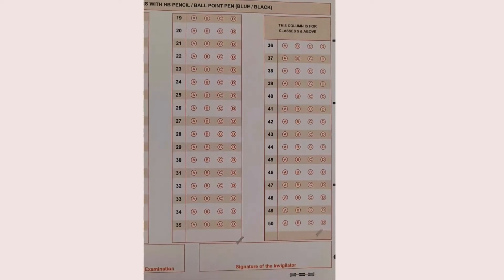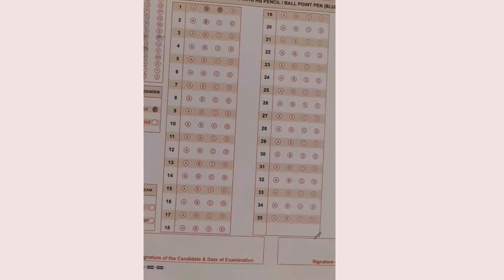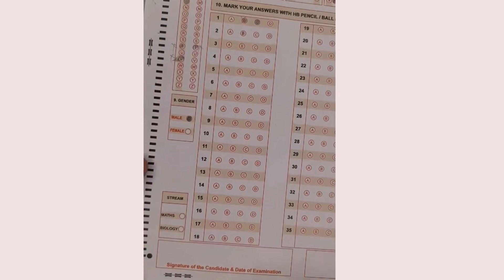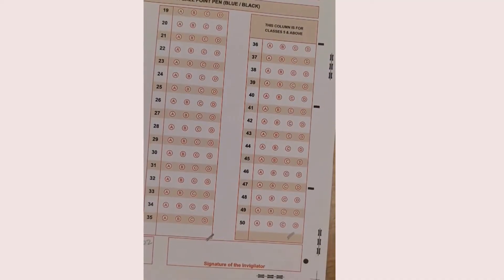The last thing on side one is the candidate's signature and date of examination in the column at the bottom. Write your signature — if you don't have one, write your name like 'Sachit.' For the date, write for example 18th October 2022. The invigilator will put their signature here as well.